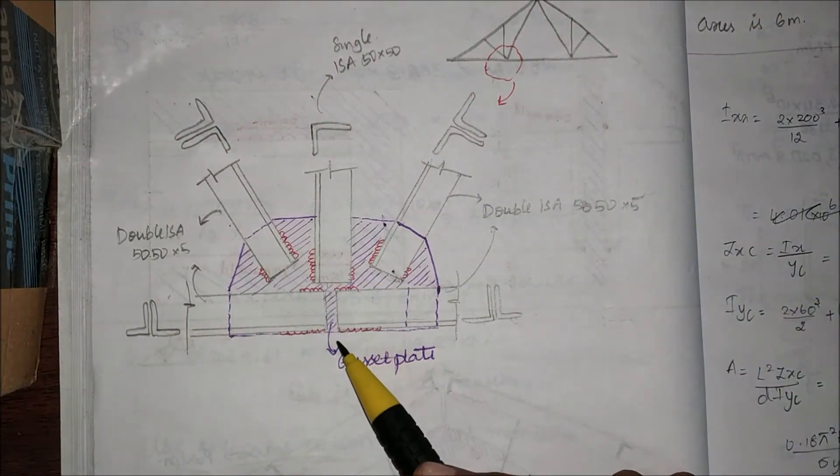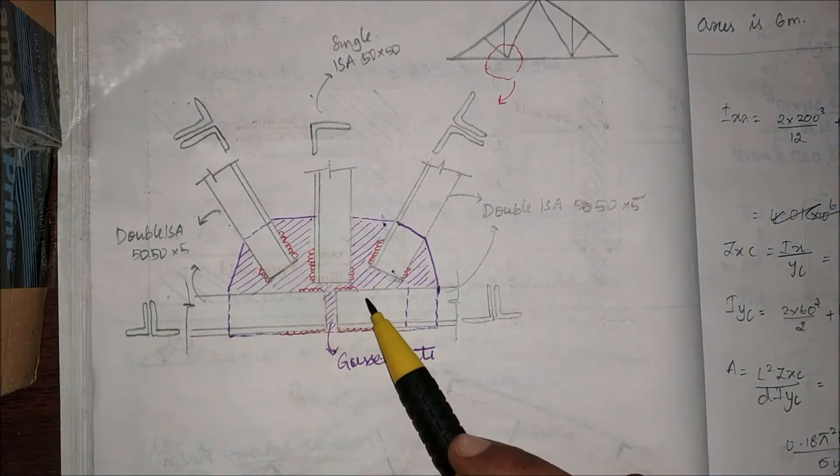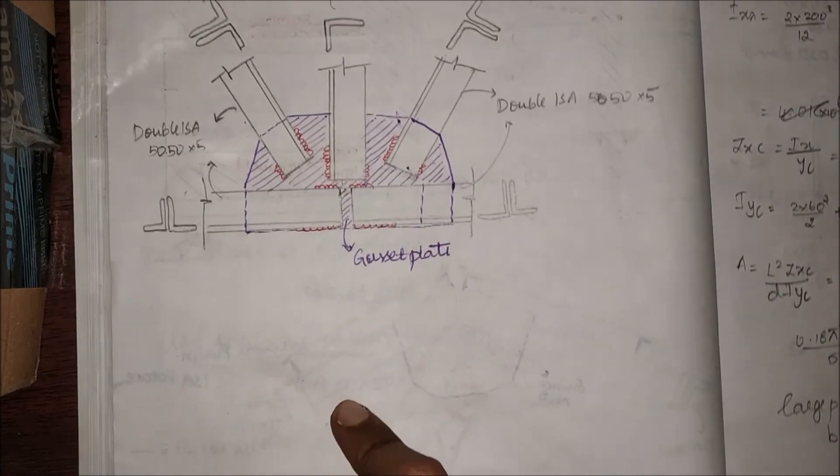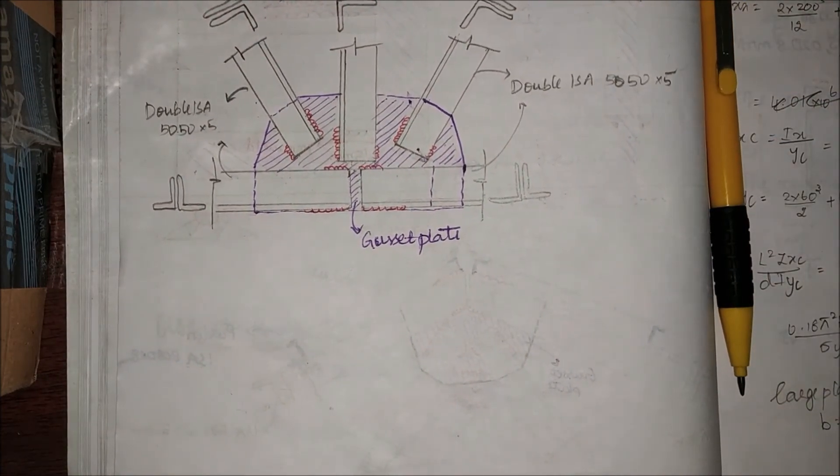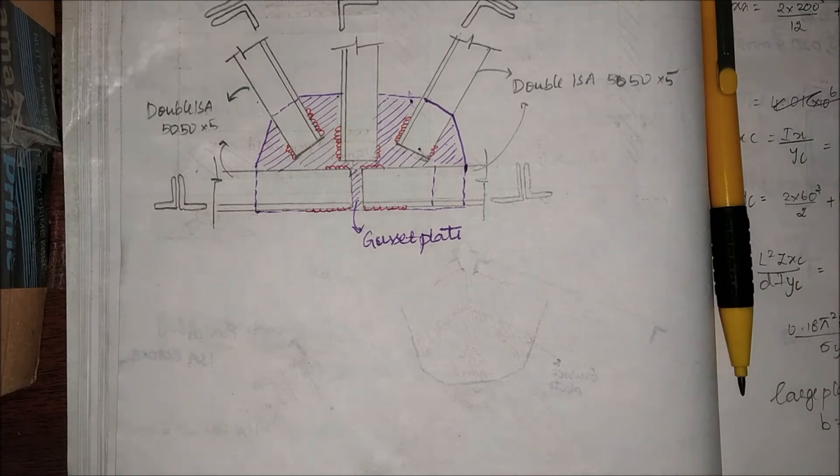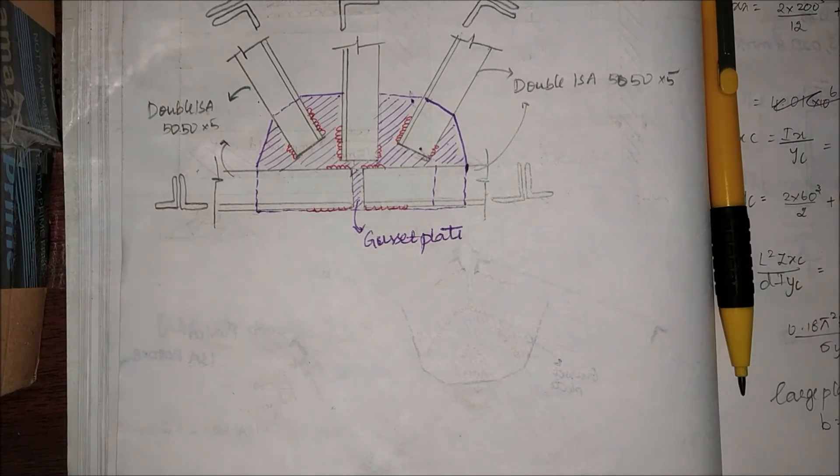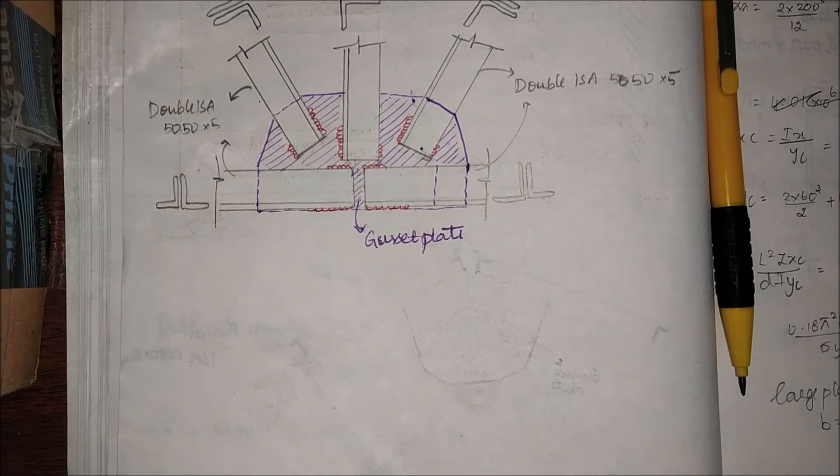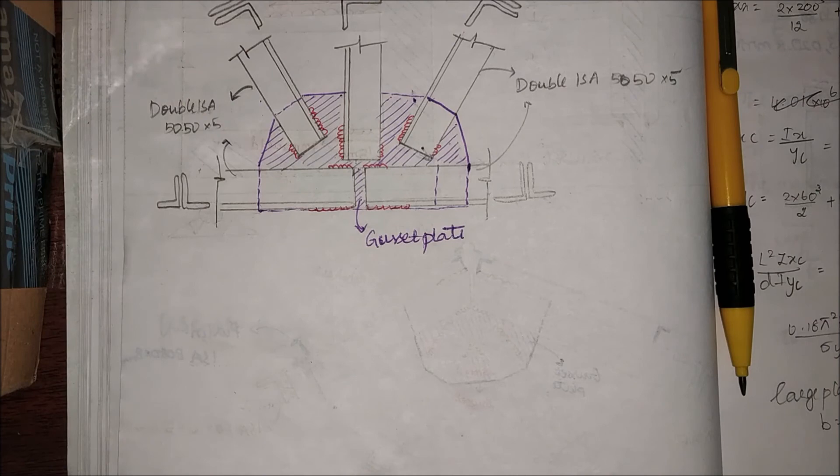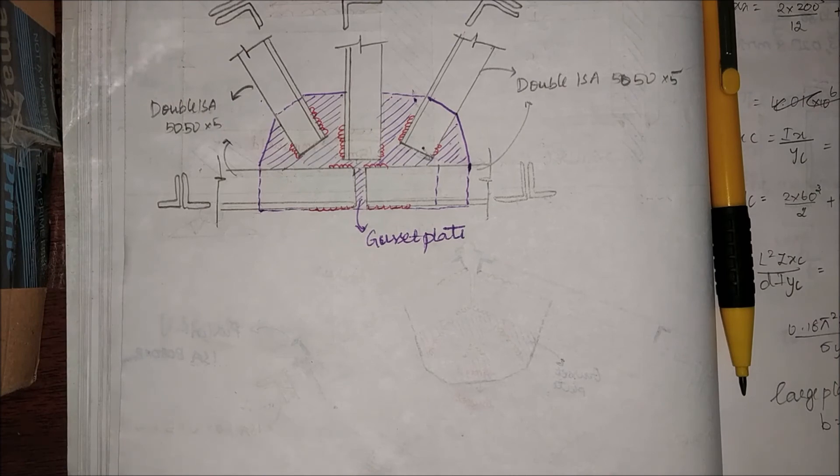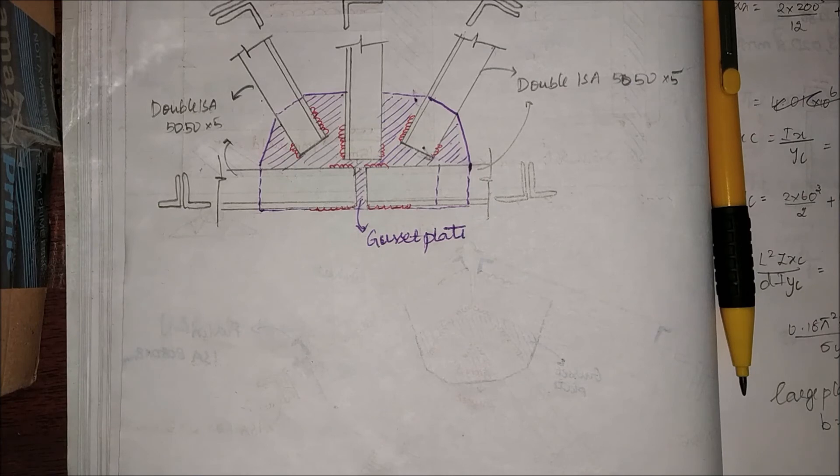So with this we come to the end of this problem of roof truss design. I hope you guys were able to understand it. In case you had any difficulties, let me know in the comments below. I'm also thinking of providing lectures on PEB (pre-engineered buildings). I haven't found anything about them on the internet, and since it is my project work, I thought of sharing it. Let me know what you think of it and whether it will be useful for you.